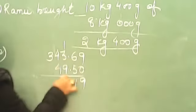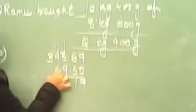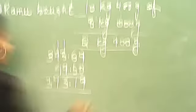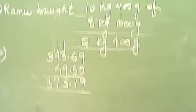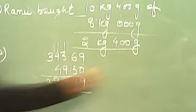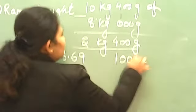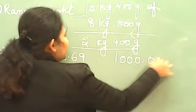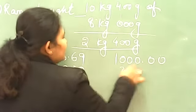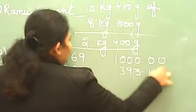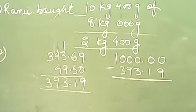3, 393.19 and you have to subtract from 1000. So this is 1, 0, 0, 0, 0, 0 and this is 393.19. You will simply subtract it.